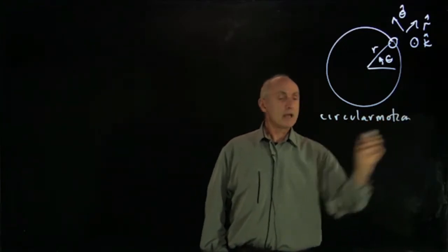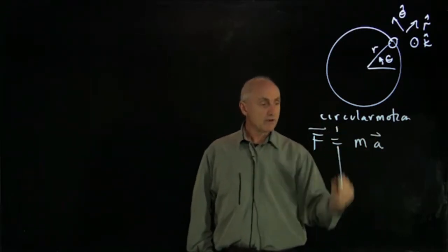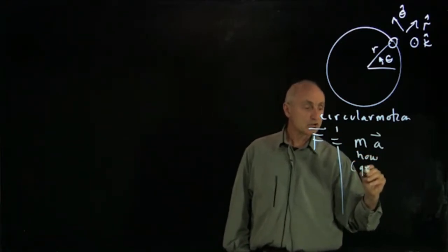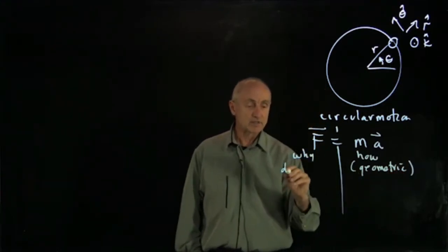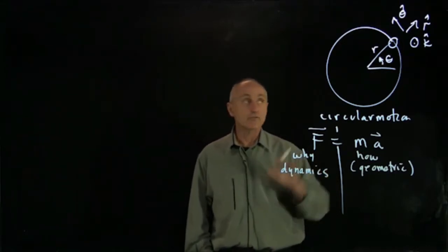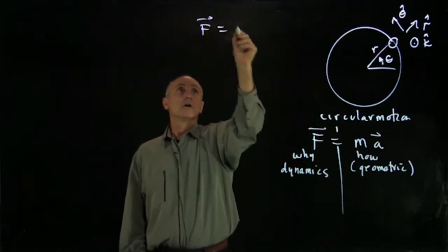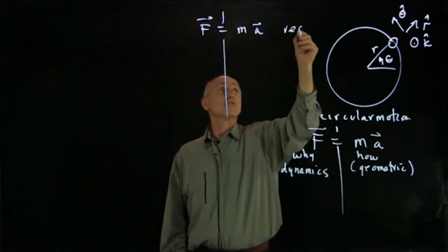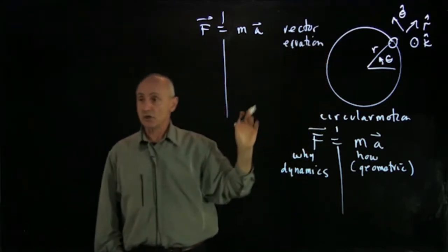When we write Newton's second law as F equals ma, remember we can divide these two sides. This side, the how, is a geometric description of the motion, and this side is the why, and this is the dynamics of the motion. And the dynamics come from analyzing the forces that are acting on this object. When we're applying this mathematically to circular motion, F equals ma, this is a vector equation. And so what we need to do is think about each component separately.